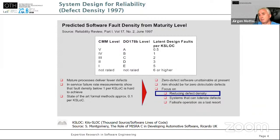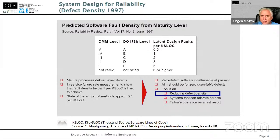We have two strategies: one is having a good development process — a lot of software engineering research goes in this direction — and the other is how to handle faults in technical systems. So fault reduction, fault handling, fault discovery, fault recovery, fault prediction — these are topics in software and system engineering. To reduce faults we have technical aspects. A paper from 2012, 15 years later, shows a comparison of projects in the same order of defect density per kilo lines of code; the more mature the process, the fewer defects.